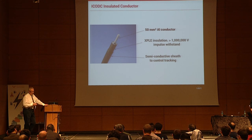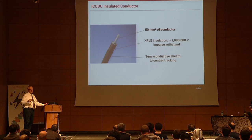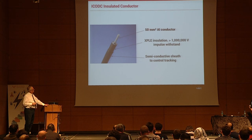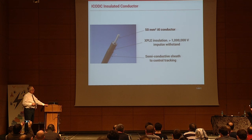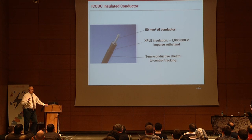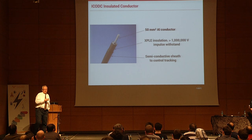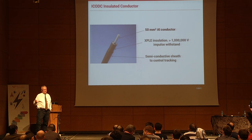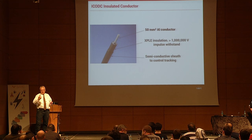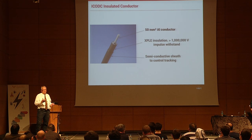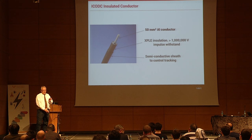The insulated conductor is 50 mm², aluminum or copper, with insulation and a semi-conductive outer shield. What's important about the semi-conductive property — also present in the array core cable — is that it creates a capacitive coupling with the structure, equalizing charges. Bonding the cable to the structure at certain intervals, combined with the semi-conductive layer, allows equalization of the charges.